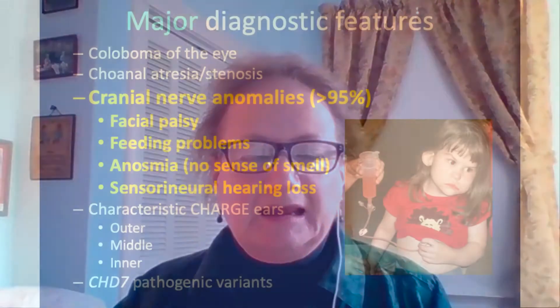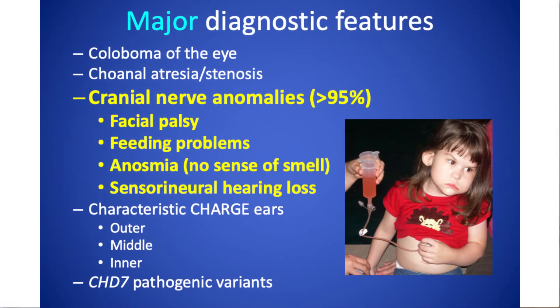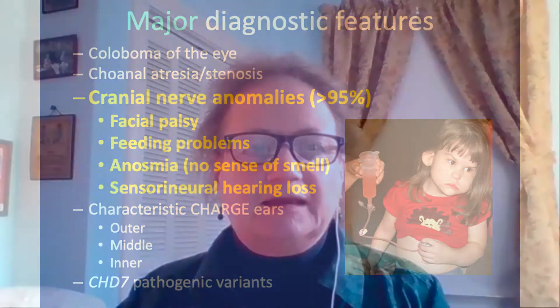The third major diagnostic feature is cranial nerve anomalies — and this is a whole set of features. If we take all of them together and say who has at least one of these, more than 95% of people with CHARGE have some kind of problem with at least one of their cranial nerves. These can cause problems with facial palsy, feeding problems, anosmia (no sense of smell), and sensorineural hearing loss.